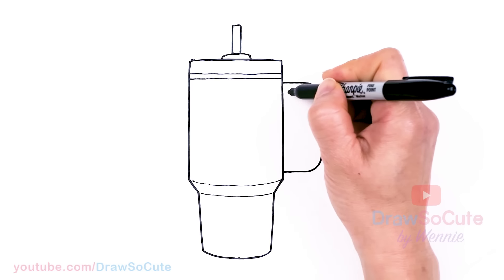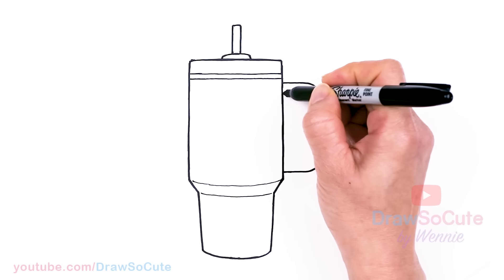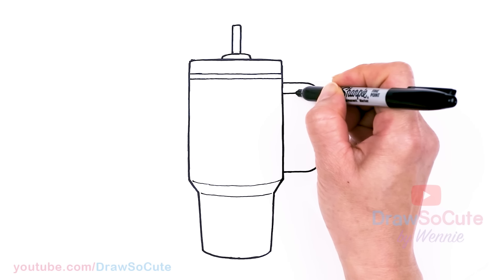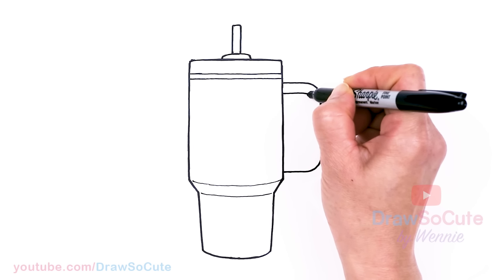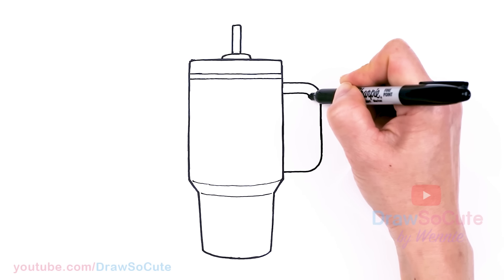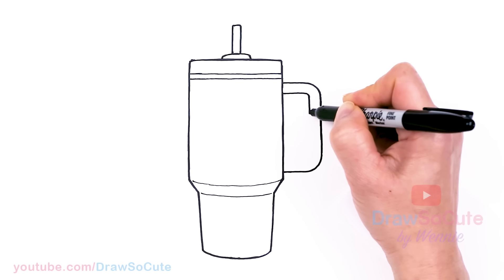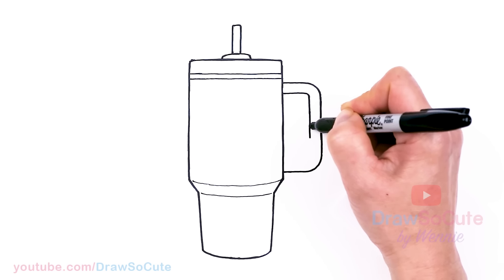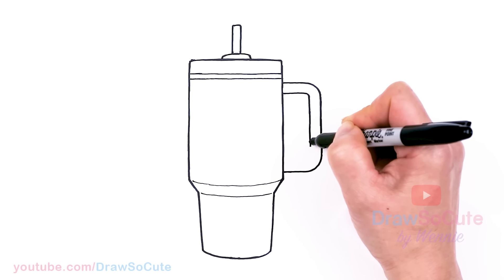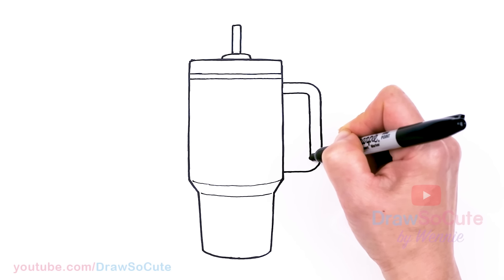And then for the inside, let's come about right here. We're just going to thicken everything up. So go straight and then about right here, round it off and go straight down. So your goal is just to make everything nice and even all the way around and about right here.